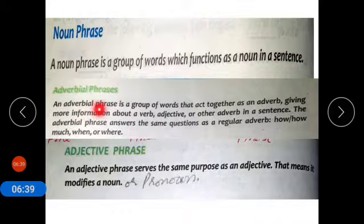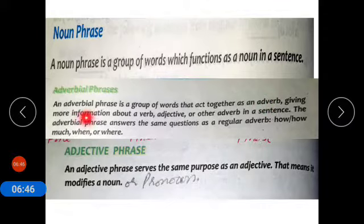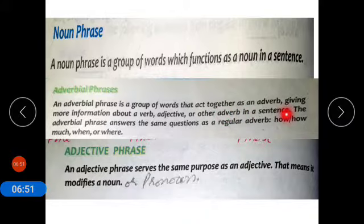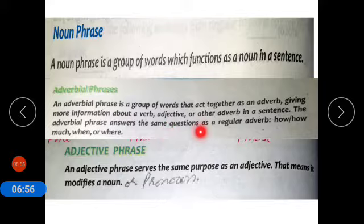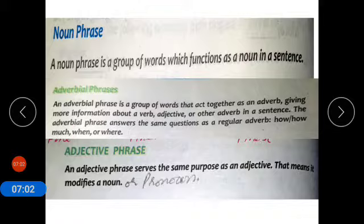An adverbial phrase is a group of words that act together as an adverb, giving more information about a verb, adjective, or other adverb in a sentence. Adverbial phrases answer the same questions as a regular adverb: how, how much, when, or where.